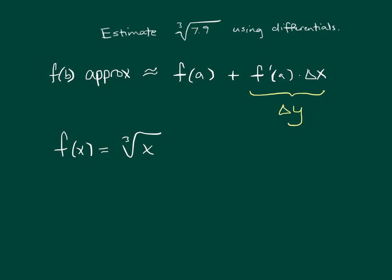And what's near 7.9? We know that b is 7.9. So in looking for a, what's near 7.9 that has a nice easy cube root, we could say that a is 8. And put those together, and it's going to make delta x equal to negative 0.1.